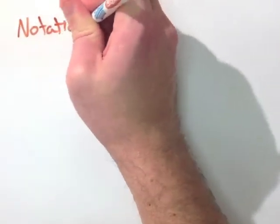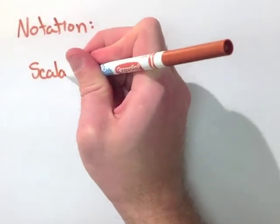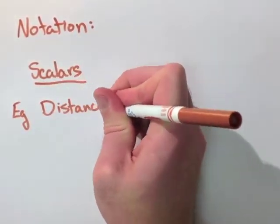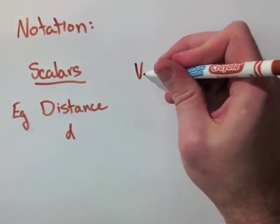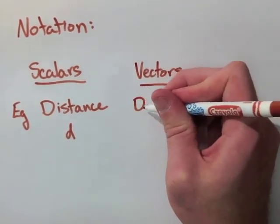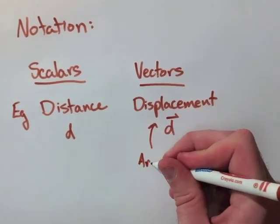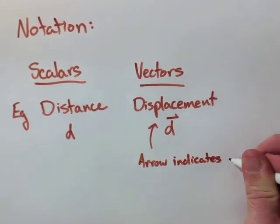Now, when we're talking about notation for this, it's really easy to put scalars. Scalars, we just look at what we're talking about, distance, and we put the letter associated with it. Now, vectors is very simple as well. It's displacement but instead of just having the D, we put an arrow. The arrow denotes that we have some direction associated.